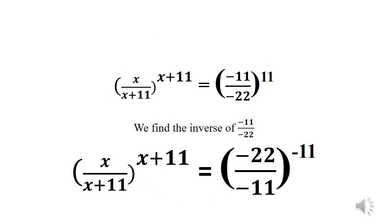Now we find the inverse of the values we have on the right side of the equation — that is minus 11 over minus 22. We find the inverse by introducing a negative to the exponent 11 and flipping the numerator and denominator. So we now have x over (x plus 11), raised to power (x plus 11), equals minus 22 over minus 11, all raised to power minus 11.